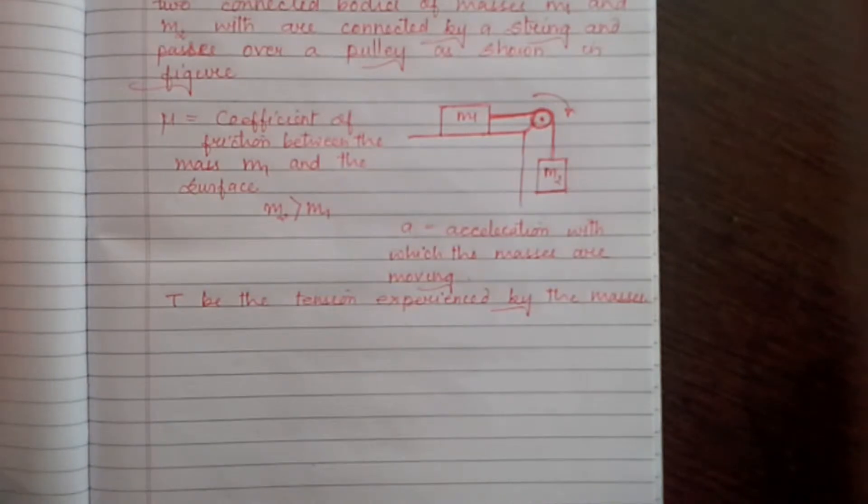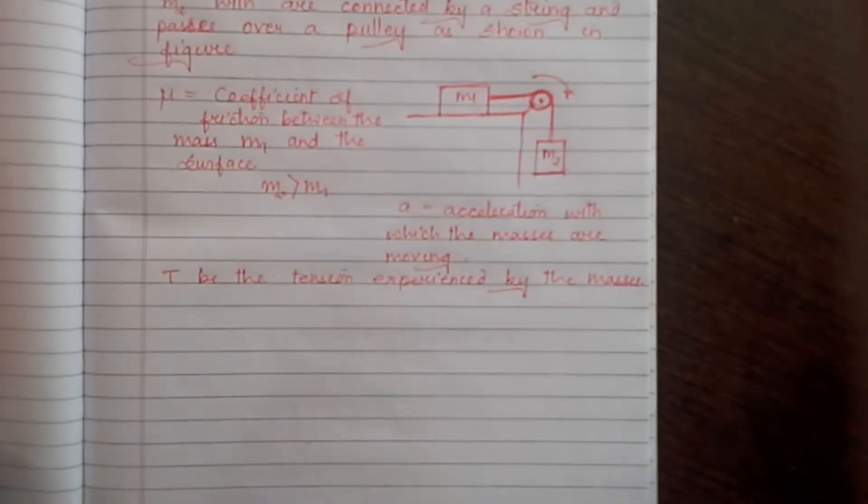Here we will assume that the string is light and inextensible - it doesn't stretch - and the pulley is frictionless. So we'll draw the free body diagram for both mass M1 and M2, indicate all the forces, resolve them, and find the expression for acceleration and tension.